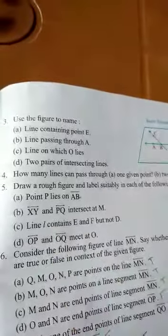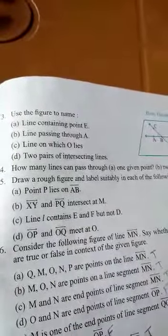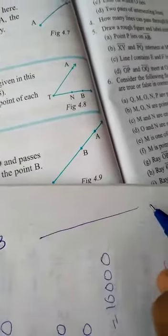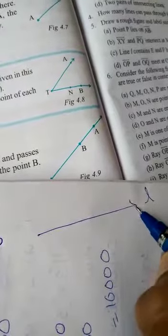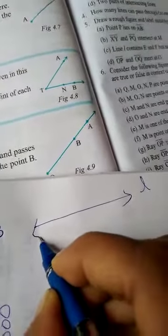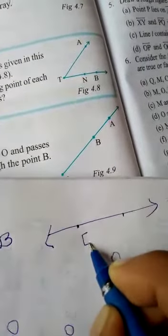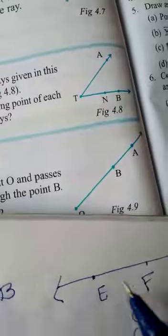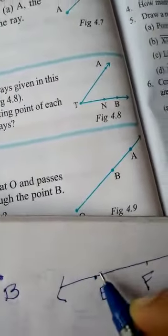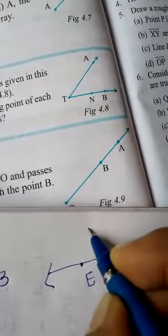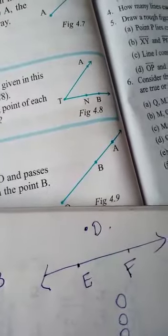See, line L contains E and F but not D. Draw any line named L. It contains E and F means mark any two points as E and F. Now, a point not in D means not on the line, outside D. This is the figure.